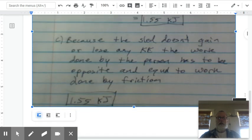And then, because the sled isn't speeding up or slowing down, it's moving with a constant velocity, it's not gaining any energy. And if it doesn't gain any energy, then there's no net work. And therefore, the work done by the person has to be equal and opposite to the work done by friction. So the two values are equal. So again, it's 1.55 kilojoules.